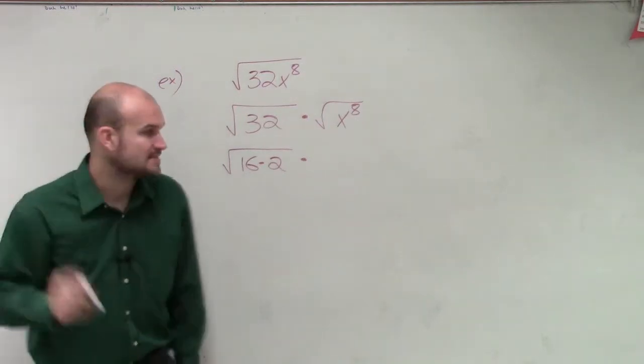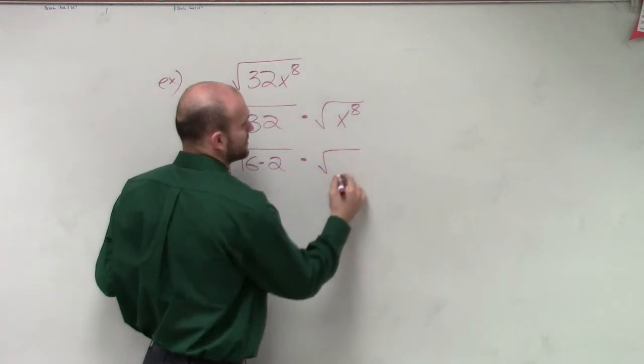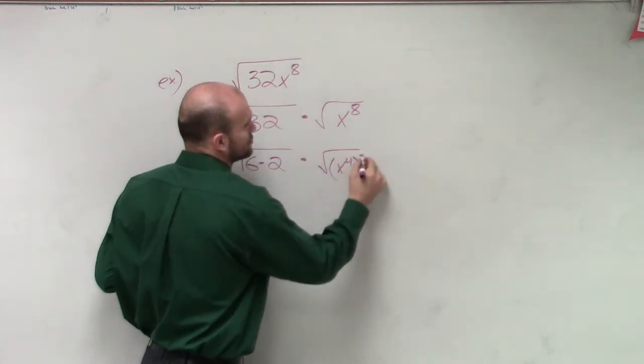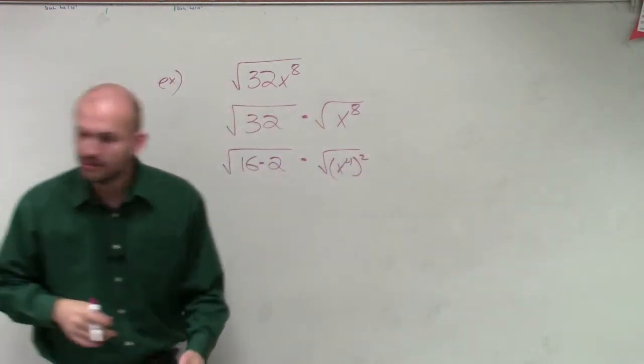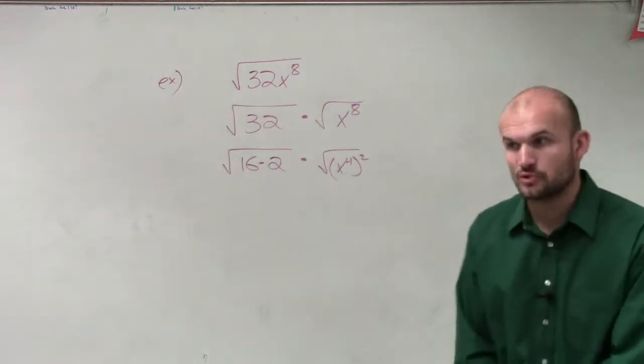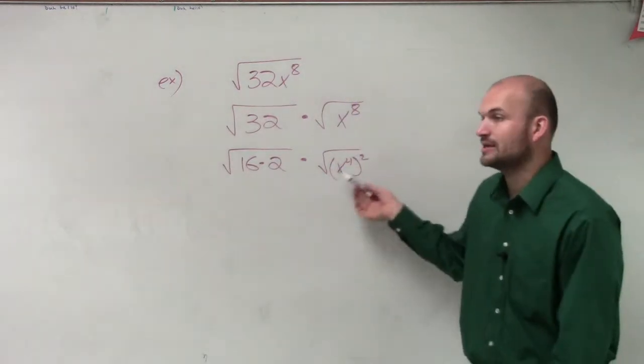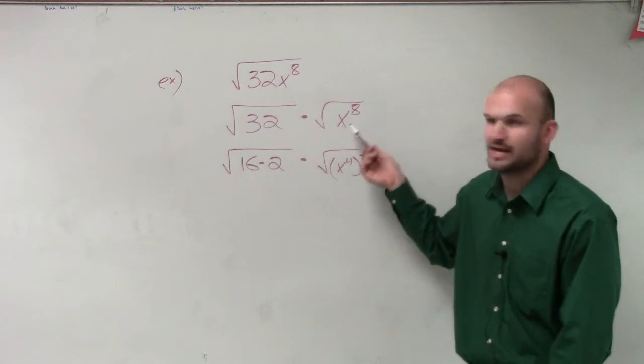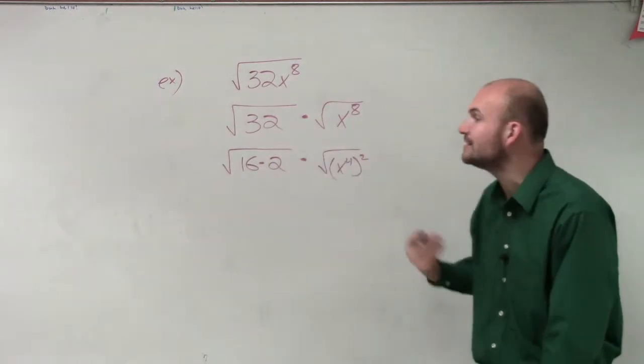Right, yes. Yes, but let's actually write it like this: x to the fourth squared. Rather than write it x squared to the fourth power, let's write it as x to the fourth squared. The reason being, is this still going to give me x to the eighth, just like it would have been what you said? Exactly.